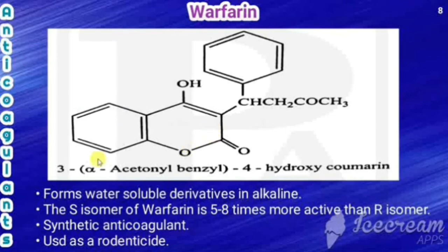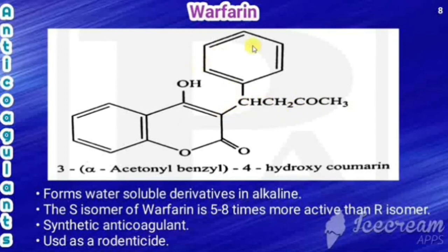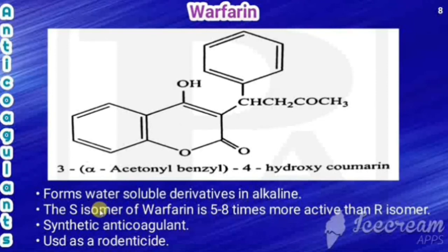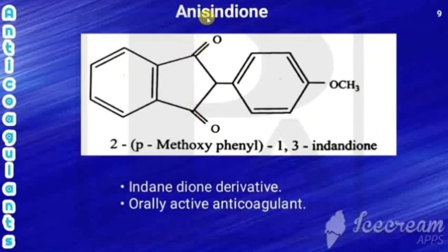The next drug is warfarin, also a coumarin derivative. It is 4-hydroxycoumarin with a substituent at the third position: a phenyl group with a CH2 (benzyl) and a CH3CO (acetone) group, making the third carbon the alpha carbon. The chemical name is 3-(alpha-acetonylbenzyl)-4-hydroxycoumarin. It forms water-soluble derivatives in alkali. It has two isomers, S and R; the S isomer is five to eight times more active than the R isomer. It is a synthetic anticoagulant and is also used as a rodenticide.